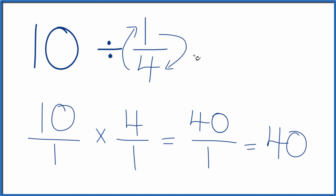So when we divide 10 by 1 fourth, we end up with 40 here. If you multiply 40 by 1 fourth, you'll get 10. So you can go back that way as well.